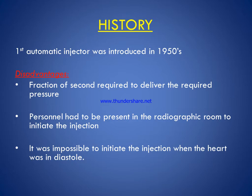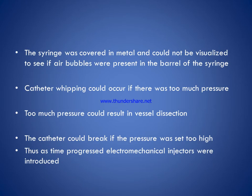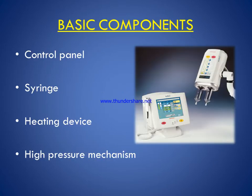Regarding the history of pressure injectors, the first automatic injector was introduced in 1950. Its disadvantages included: a fraction of a second was required to deliver the required pressures, personnel had to be present in the radiographic room to initiate the injection, it was impossible to initiate the injection when the heart was in diastole, the syringe was covered in metal and could not be visualized to check for air bubbles, catheter whipping could occur if there was too much pressure, too much pressure could result in vascular dissection, and the catheter could break if pressure was too high. Thus, over time, electromechanical injectors were introduced.